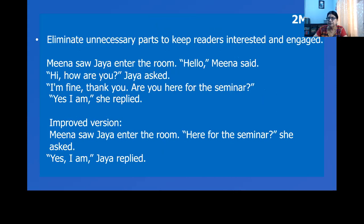Another way to keep your dialogue writing interesting and engaging is to remove what is unnecessary. What I mean is while you are actually speaking, you may use a few extra words which are relevant for the situation. While writing, you can make improvements in them. Read the first one, then see the improved version. The improved version has fewer words, but the context and meaning are effectively conveyed.